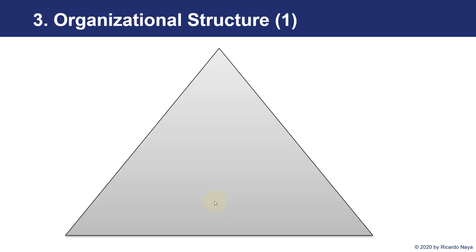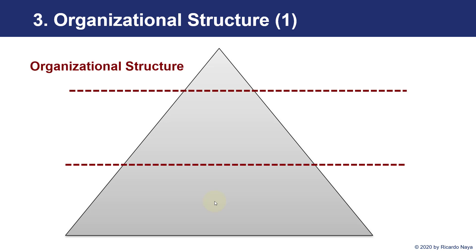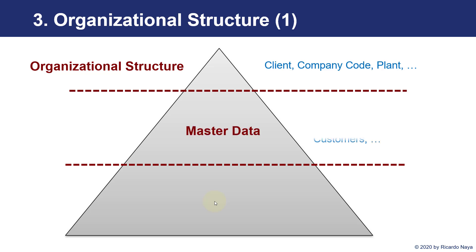Regarding organizational structure, the main thing we have to remember is that there is going to be different data in SAP. First, we have the organizational structure, which is going to be how we organize all the rest of the data — for instance, the client, company code, and plant. These are very stable data that are set up once we start the implementation of S/4HANA and may change in the future but not frequently. Then we have another level called master data — quite stable data like materials, vendors, and customers — that is going to be used in the transactional data and reused across different transactions.